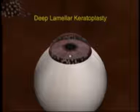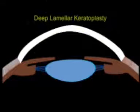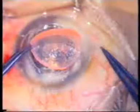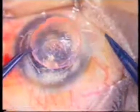Deep Lamellar Keratoplasty, on the other hand, involves replacement of corneal tissue anterior to the Descemet's membrane. As it preserves the host endothelium, taking only the stroma and epithelium from the donor, this procedure eliminates the possibility of endothelial rejection.